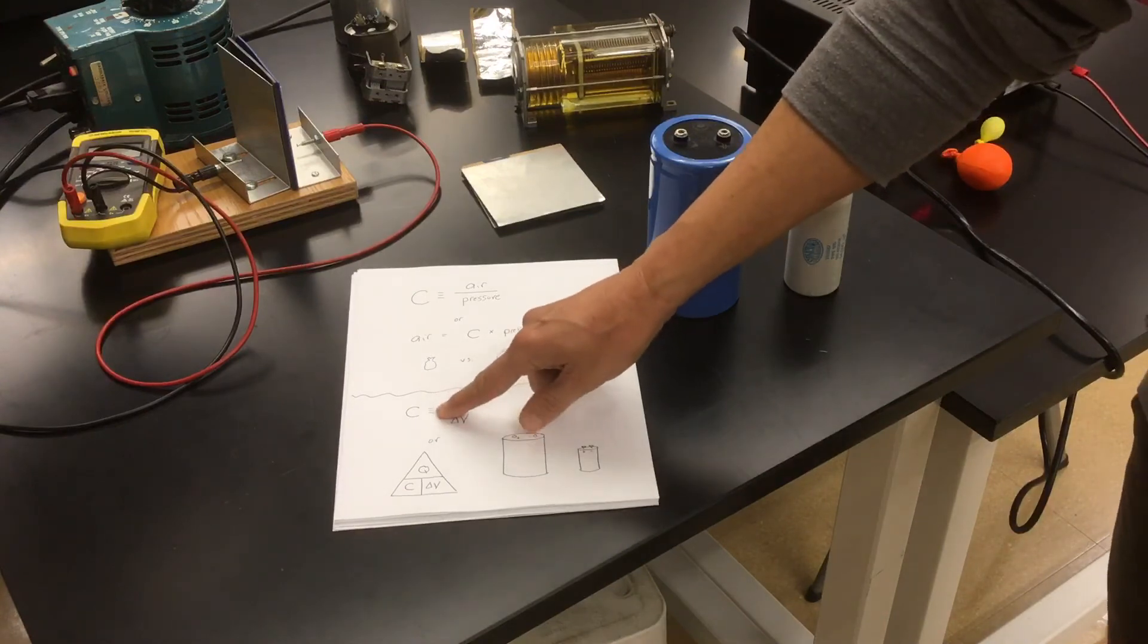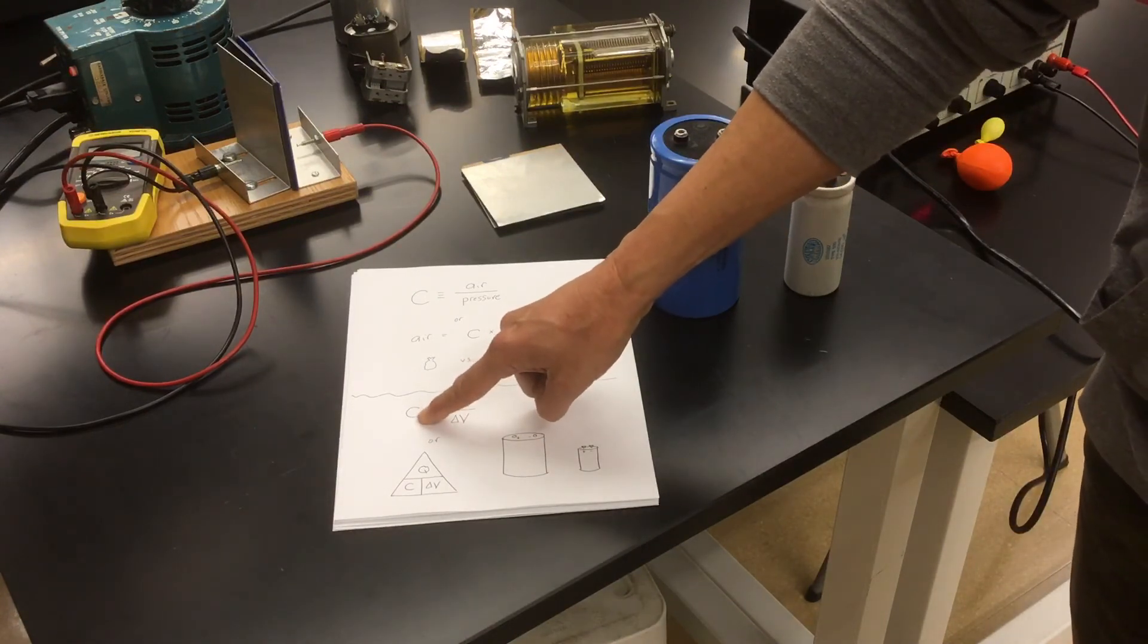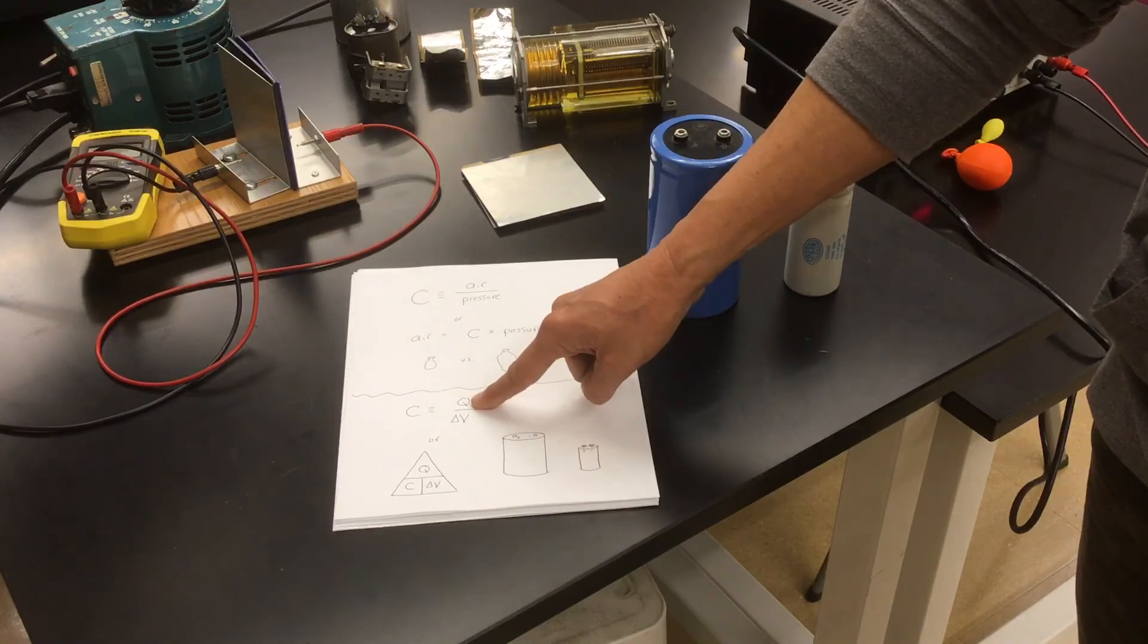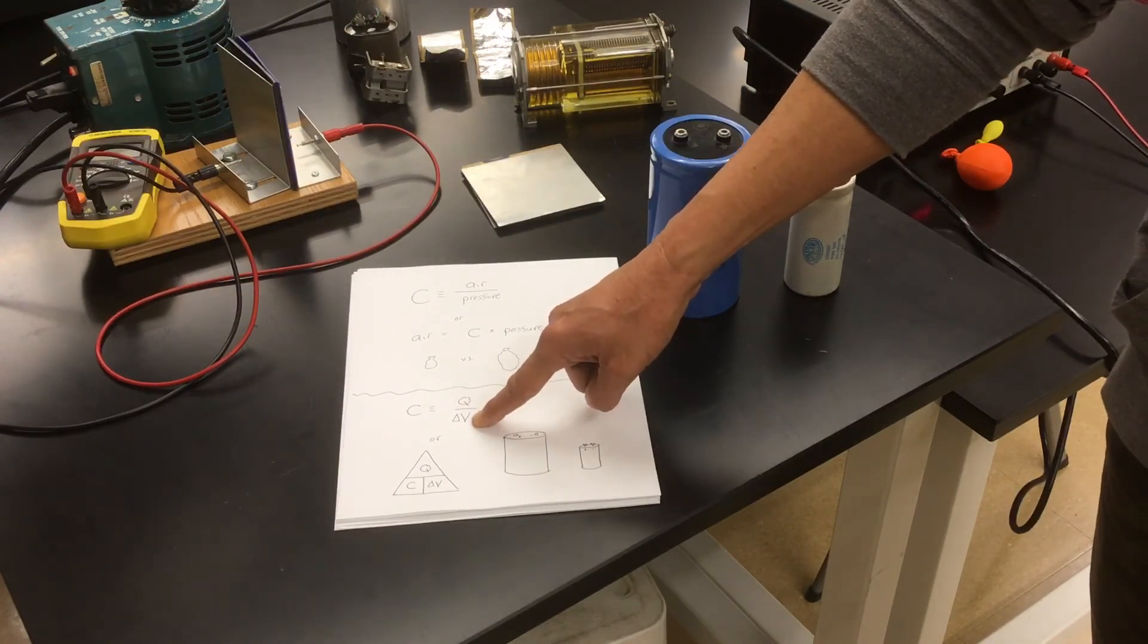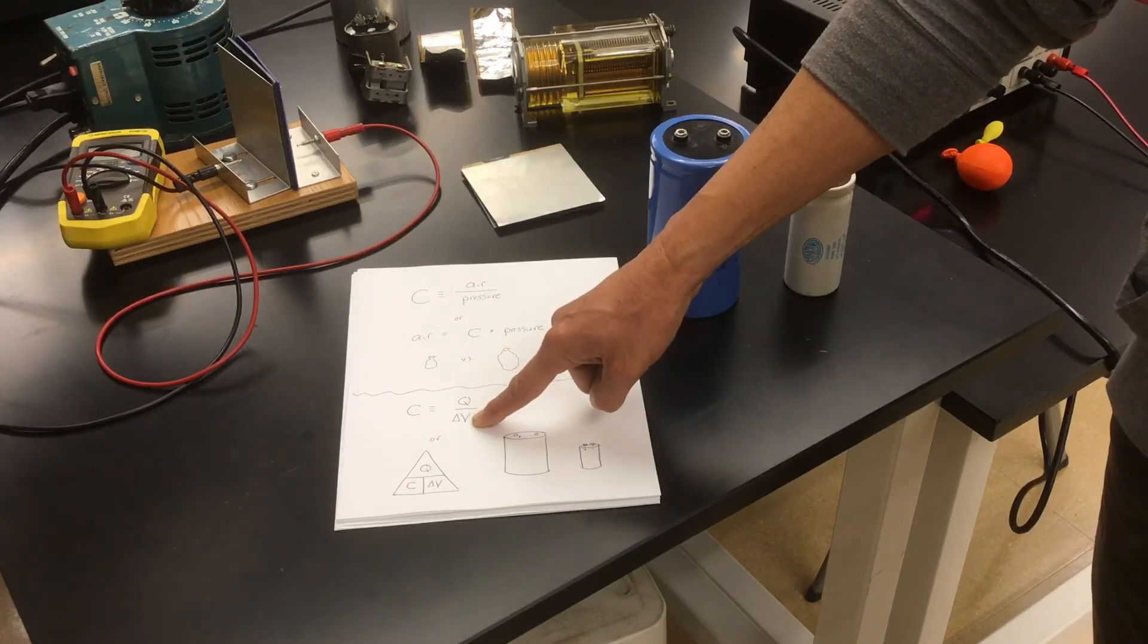So we define a similar equation. We say the electrical capacitance is equal to the ratio of how much charge it stores in comparison to what potential difference, or what voltage, in other words, was applied in order to store that charge.